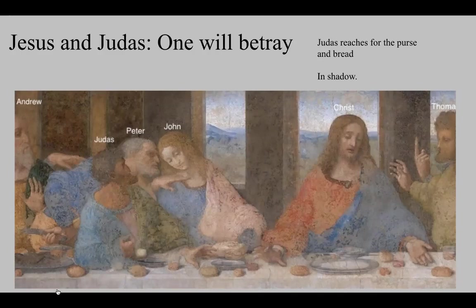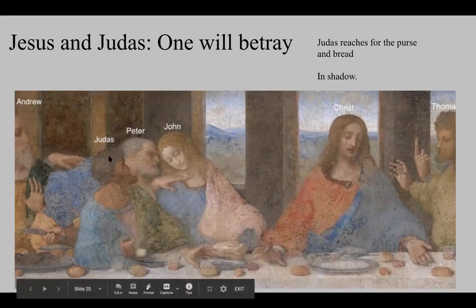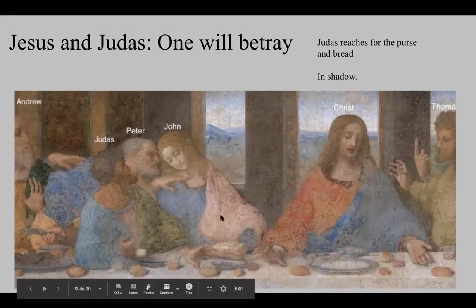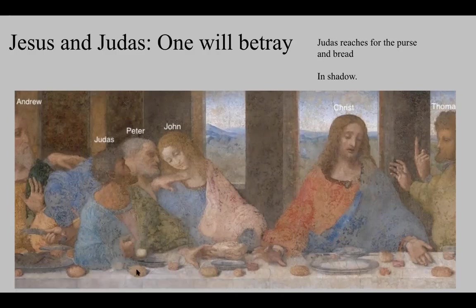Judas is actually rather close to Jesus in this painting, his face in shadow — which is foreboding. He is reaching for the same platter and bread as Jesus, and this shared reaching is a marker of the betrayal. In his other hand, Judas holds a purse with money, representing his betrayal — he was paid by the Romans for his knowledge of where Jesus was and who Jesus was, ultimately betraying him with a kiss on the cheek so the Romans would know who Jesus is.